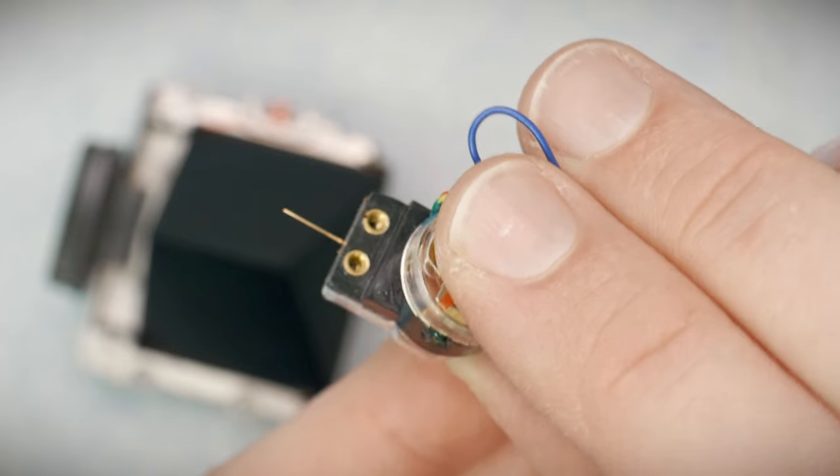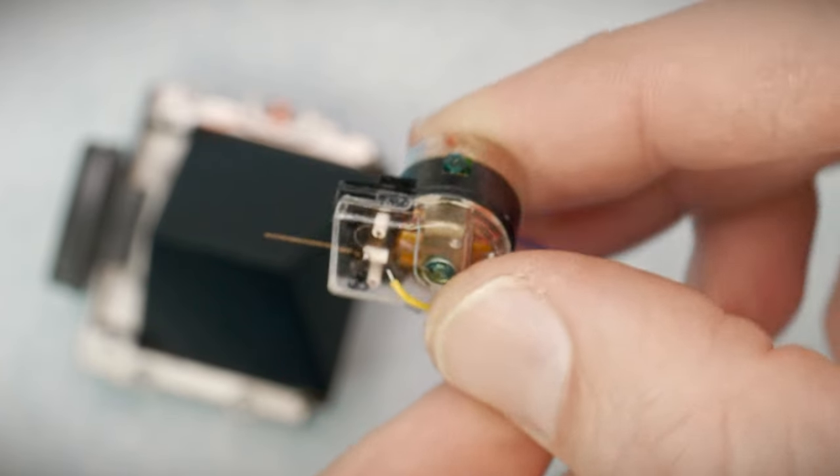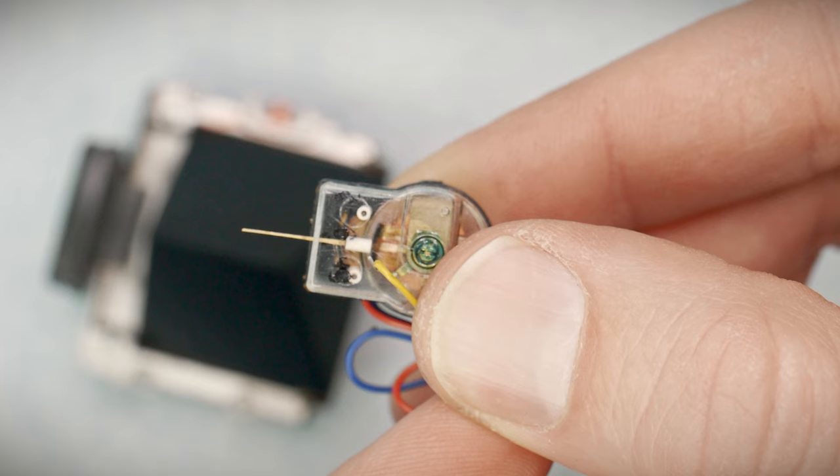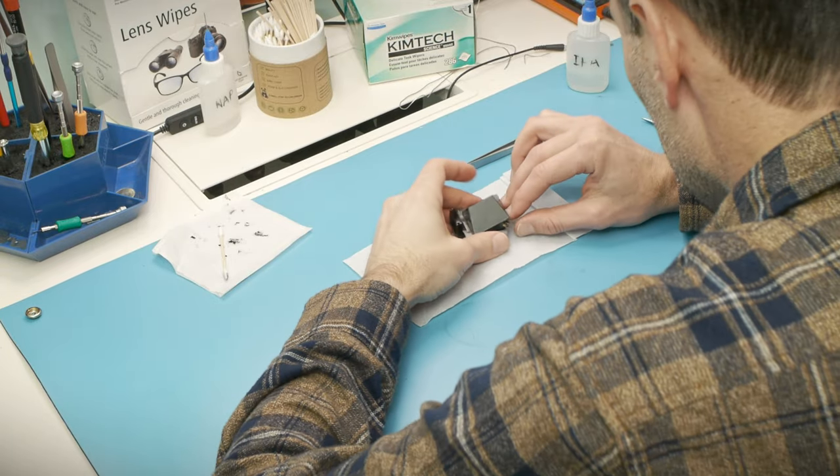And there is our match needle. That's the bit that moves up and down in the viewfinder when you're adjusting the exposure. I have to be careful with that one. Okay, let's see if I can work this thing free now.